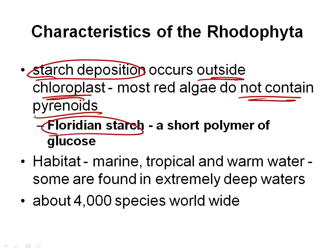It's a different kind of starch. Glucose can connect in different ways to form normal starch, cellulose, or different kinds of starch. Floridian starch is a short polymer of glucose — not a long polymer like the starch we eat. This short polymer of glucose, called Floridian starch, is unique to the red algae. These are marine organisms that tend to be tropical, warmer-water organisms.